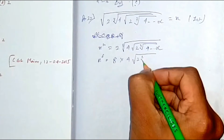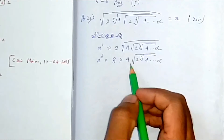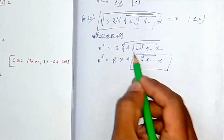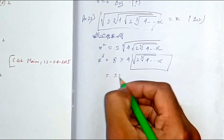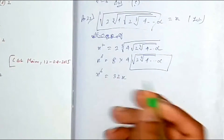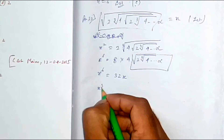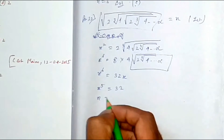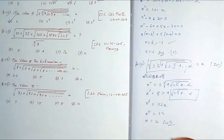After cubing, the remaining nested part equals x, so we get x⁵ = 32. Therefore x = 2. You don't even need middle term factorization here. The answer is option A, which is 2. Very nice problem!